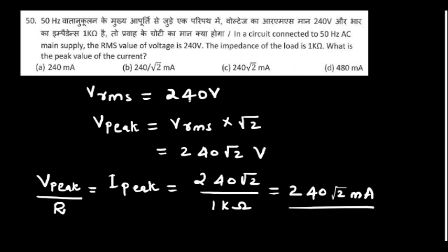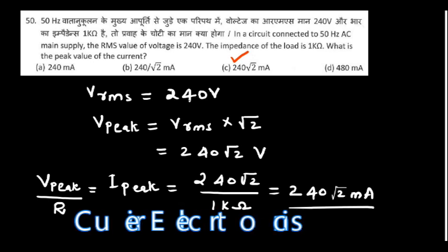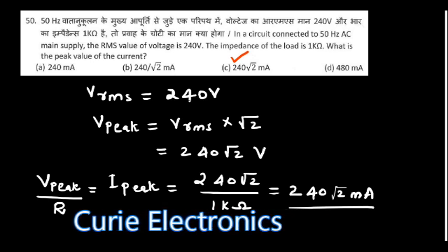In a circuit connected to a 50 Hz AC supply, the RMS value of voltage is 240V and the load is 1 kilohm. What is the peak value of the current? The peak current is 240 multiplied by root 2 milliamps. If you have any doubt about the RMS-to-peak conversion, I will put a video on the i-button — please watch it.